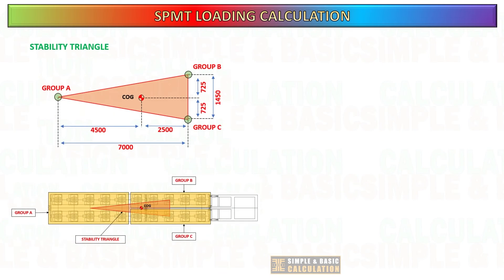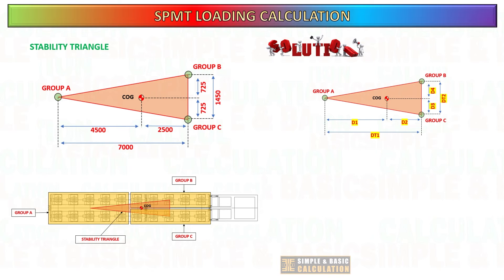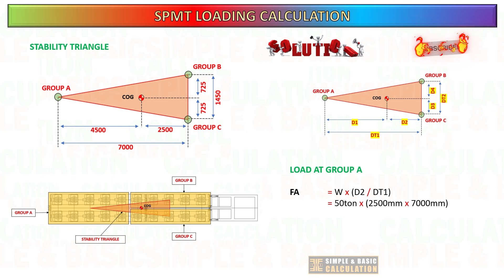Let's define each dimension with a letter so that it's easier to understand. Calculate the load at group A: total load multiplied by D2 over DT1.